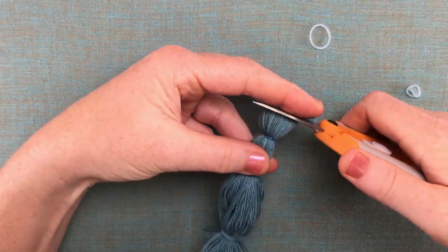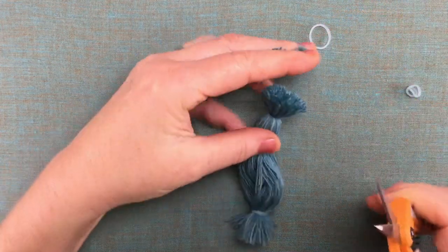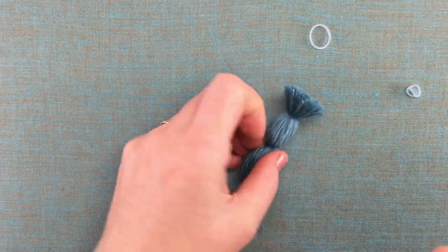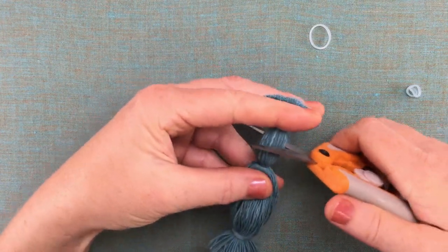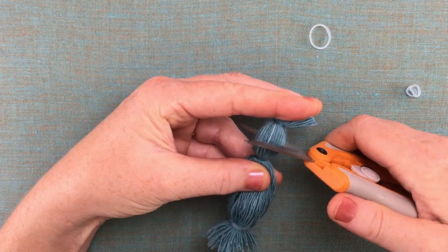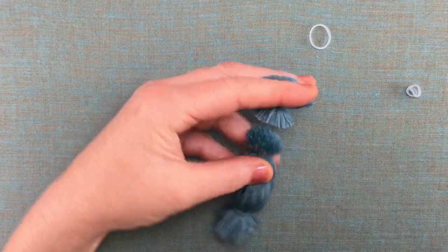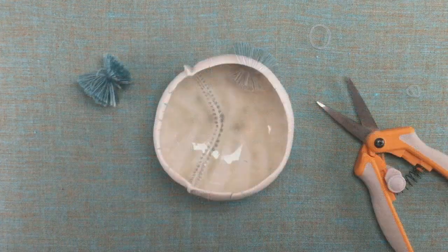So what we're going to do is just trim off the uneven edges at one end and then cut at the midpoint between the bindings. I'll set this aside for another pom-pom.